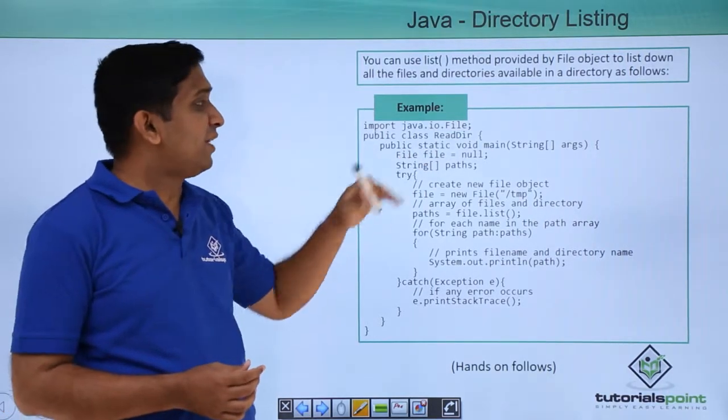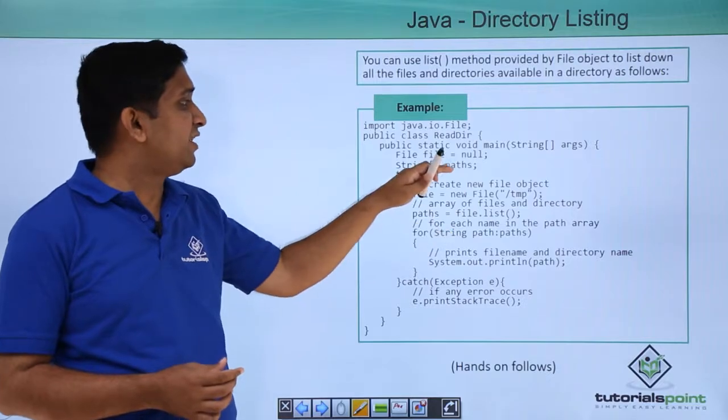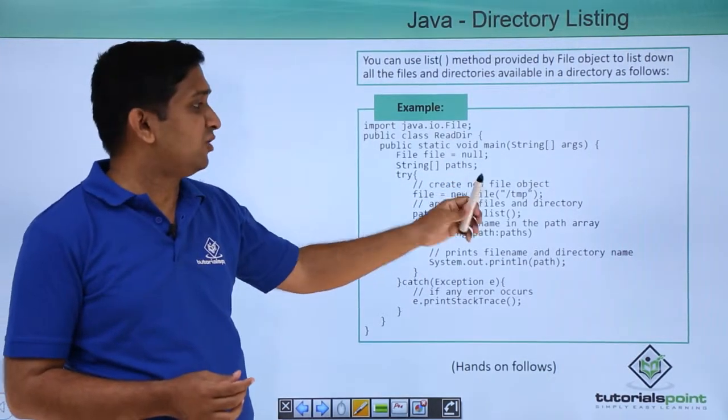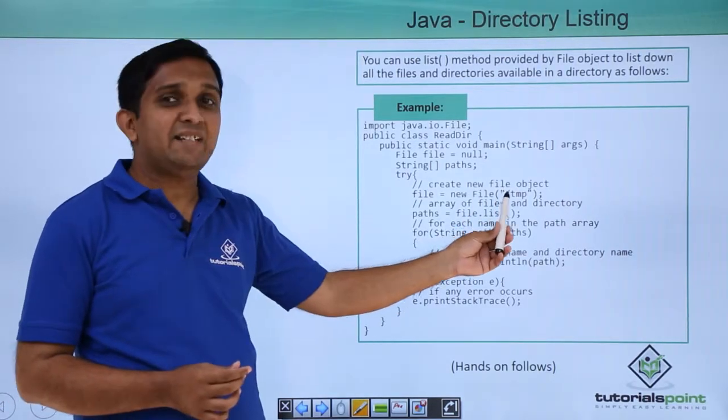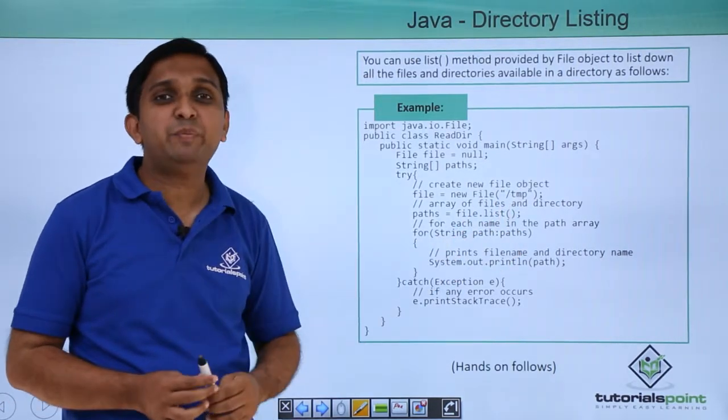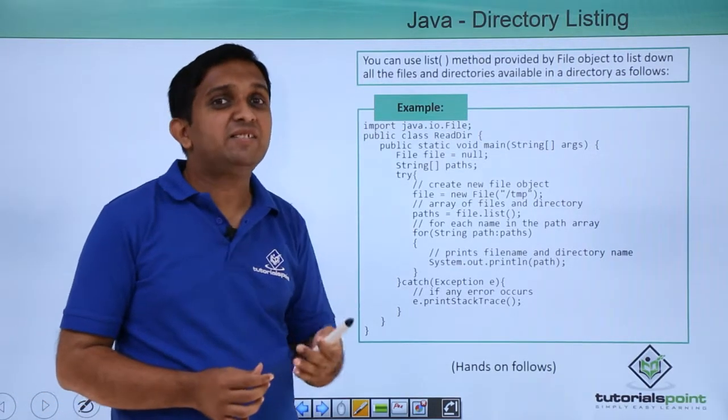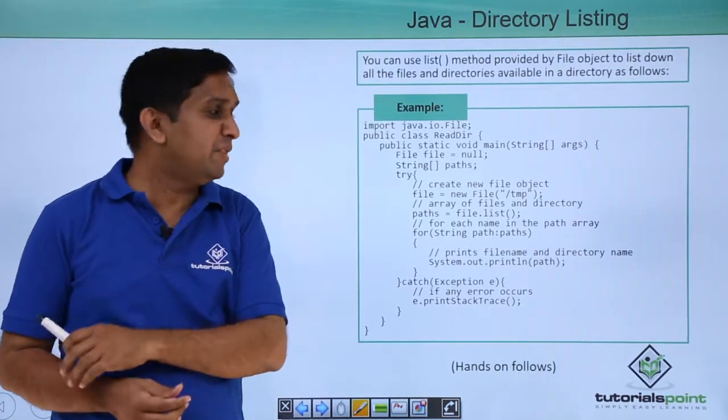So how to use that? I will take one file reference. One string is there which is paths. Now I have created object of file, suppose I have created the object of file and that is initialized to this tmp directory. So now I want to check which are the files and subdirectories of tmp directory.